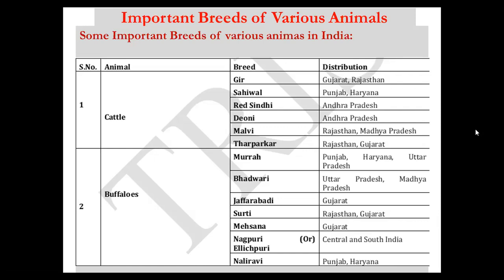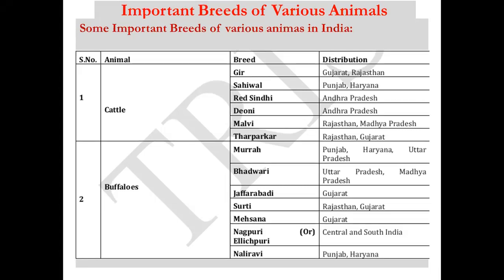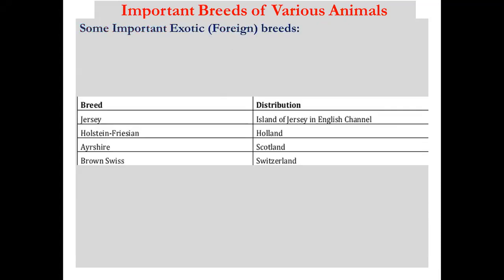Important buffalo breeds include Murrah, Badwari, Jafarbadi, Surthi, Mehsana, Nagpuri, Elijpuri, and Nali Ravi. From Gujarat we have Mehsana and Surthi. Exotic cattle breeds include Jersey from the Island of Jersey, Ayrshire from Scotland, and Brown Swiss from Switzerland. Important poultry breeds: American breeds include Plymouth Rock, Rhode Island Red, New Hampshire; English breeds include Cornish, Dorking, Orpington, Sussex; Asiatic breeds include Brahma, Cochin, Langsha; and Mediterranean breeds include Leghorn and Minorca. For sheep, Nali belongs to Jammu and Kashmir and Shahabadi belongs to Bihar.